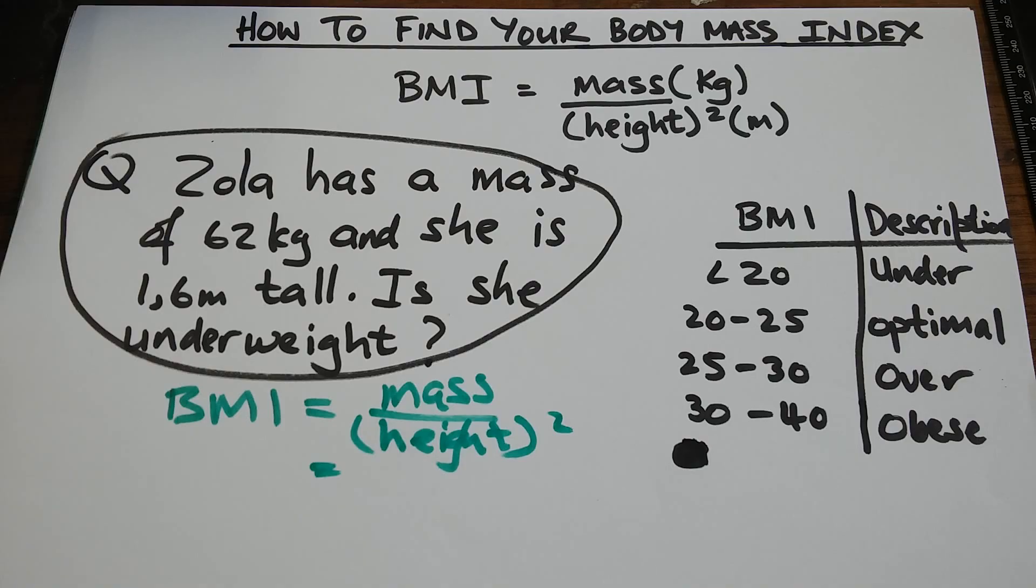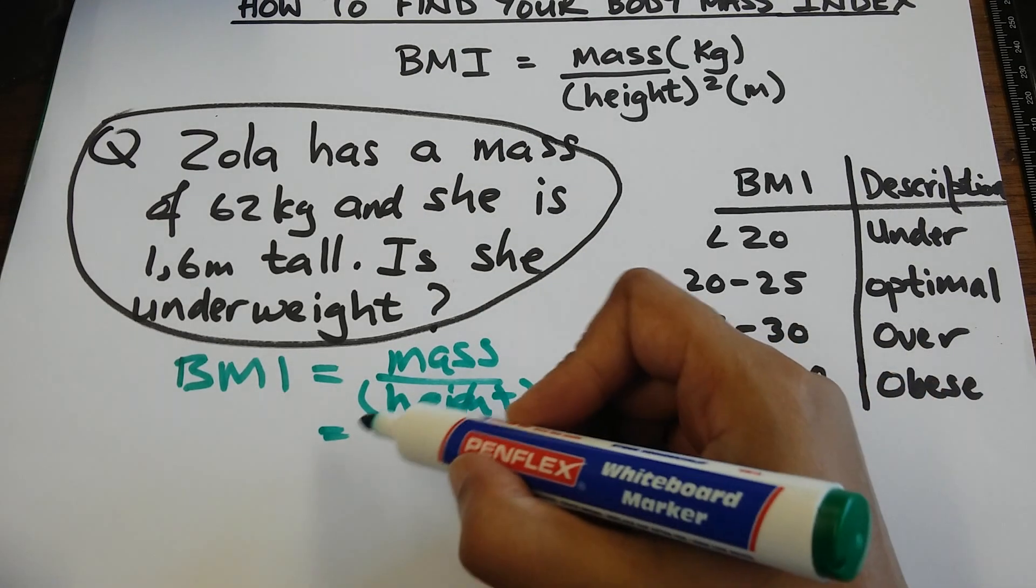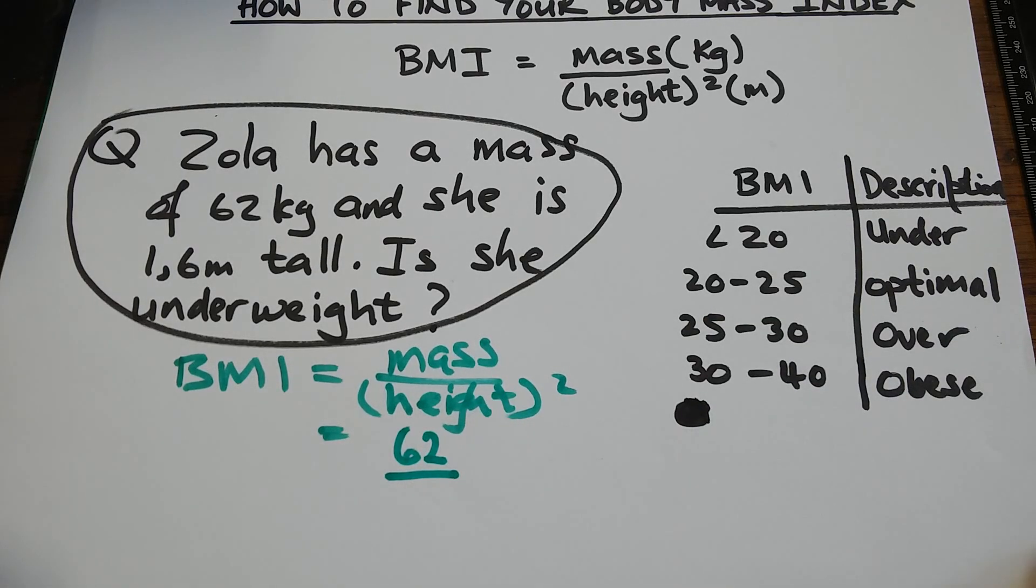Step 2, I'm going to now substitute into the formula. So, I'm going to say mass is 62. It's already in kg.